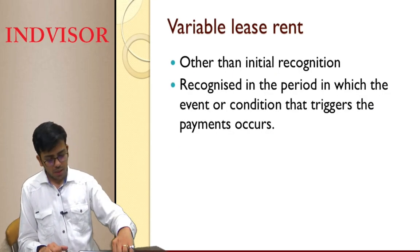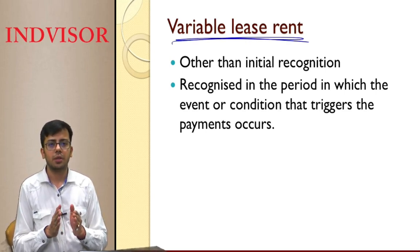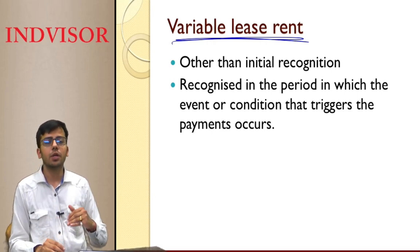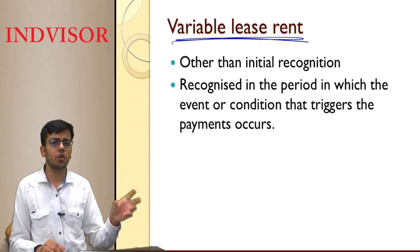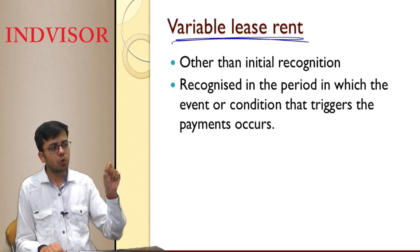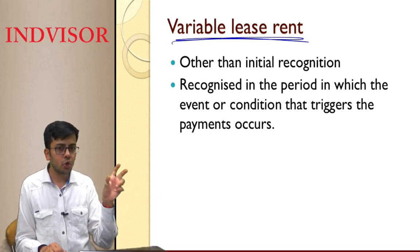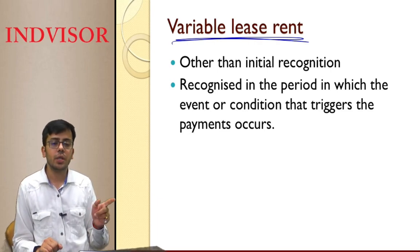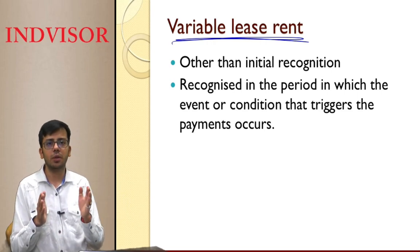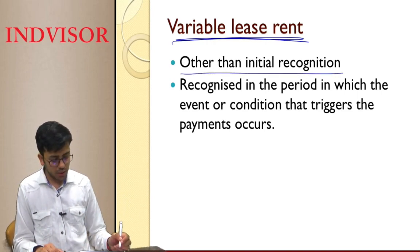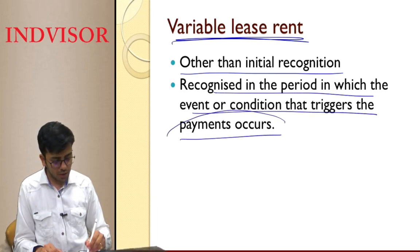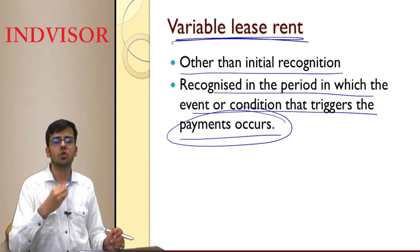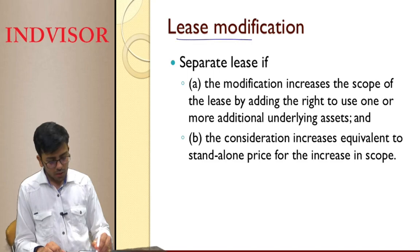Variable rent is not considered as part of lease liability. For example, if a place is leased and rent is 10% of revenue earned from that place, that is variable rent. It is recognized in the period in which the triggering event occurs — i.e., when the revenue is earned. Variable rent is not covered in initial recognition; it is recognized in the period in which the event triggering the payment occurs.